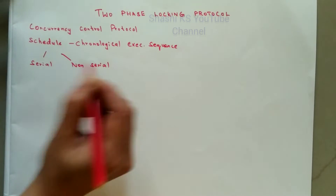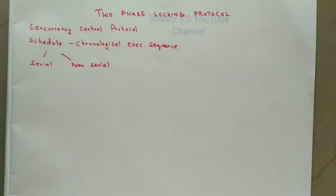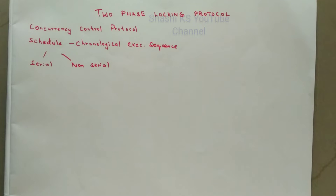In the case of a serial schedule, it is a type of schedule in which one transaction is executed completely before starting another transaction. If a schedule is not serial then it is called as a non-serial schedule, meaning before one transaction completes its execution, another transaction will start its execution. Such a type of schedule is called as a non-serial schedule.